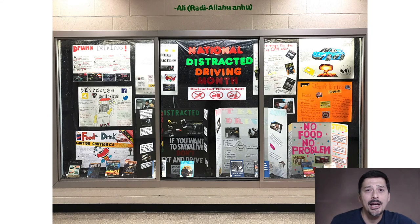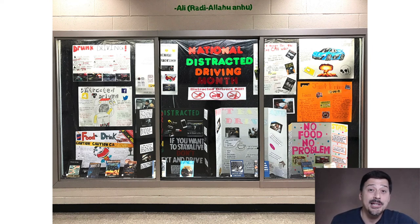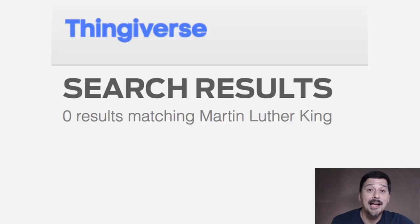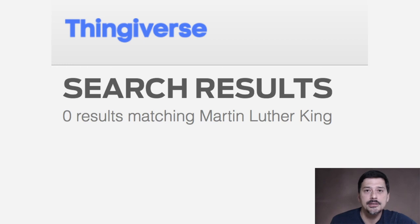So in 2014 I'm walking by the library in my school and there's a display cabinet with a Martin Luther King Jr. display. I thought, hey, I should 3D print something for that display cabinet — it looks a little sparse. So I went onto a 3D printing repository called Thingiverse where I could download something and 3D print it. I searched for Martin Luther King and found zero things. I searched different permutations — Martin Luther King Jr., MLK — and didn't find anything.